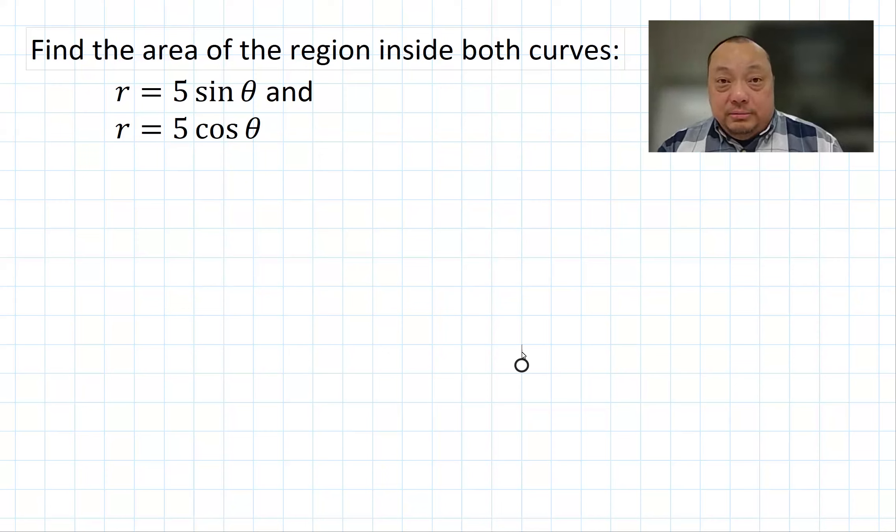Just like in usual Cartesian rectangular coordinates, when you're asked to find the area that's between two curves, you want to at least sketch the general shape of those curves. So you can tell what's inside, what's outside, especially when there are many things going on.